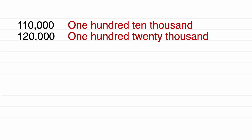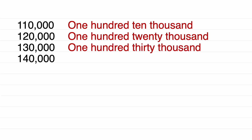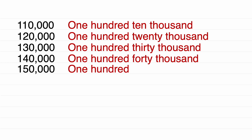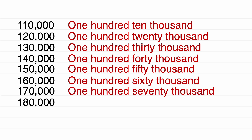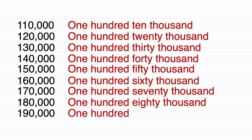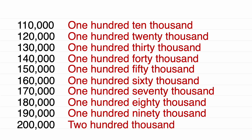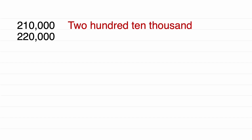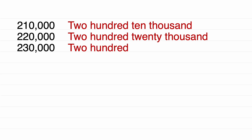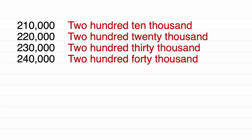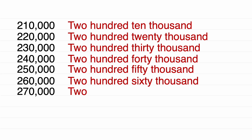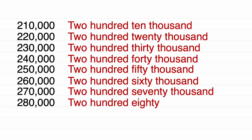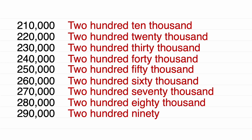120,000. 130,000. 140,000. 150,000. 160,000. 170,000. 180,000. 190,000. 200,000. 210,000. 220,000. 230,000. 240,000. 250,000. 260,000. 270,000. 280,000. 290,000. 300,000. 310,000.